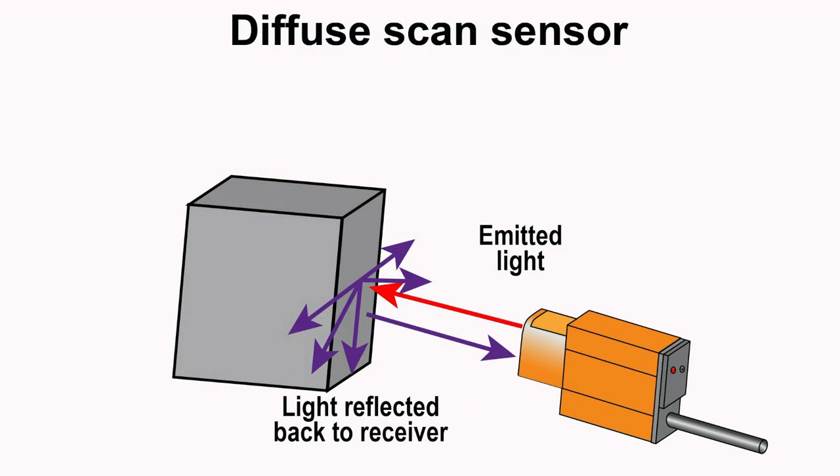Diffuses have the emitter and receiver housed in the same unit, and light is normally not returned to the receiver. The difference here is that the target acts as the reflector. When an object passes through the emitting light, the intensity of the light returned is increased and is used to detect the object.